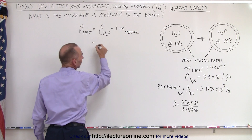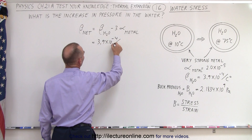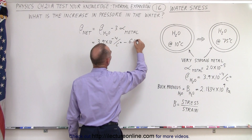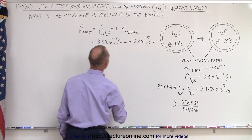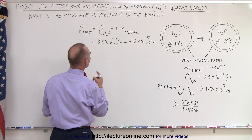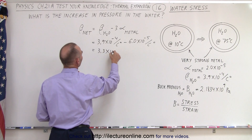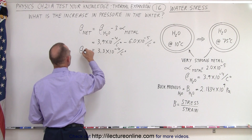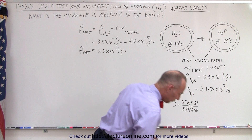That gives us 3.9 times 10 to the minus 4 per centigrade degree, minus three times 6.0 times 10 to the minus 5 per centigrade degree. Subtracting gives us 3.3 times 10 to the minus 4 per centigrade degree. So that is the net expansion coefficient due to the increase in temperature.